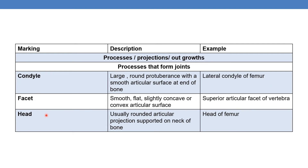Next is facet — a smooth, flat, slightly concave or convex articular surface. An example is the superior articular facet of a vertebra. Next is head — a usually rounded articular projection supported on the neck of the bone. An example is the head of the femur.